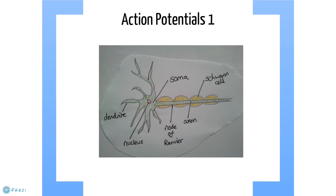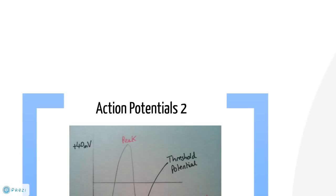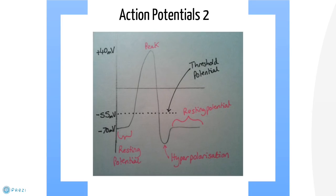An action potential is the conduction of an electrical signal down the axon. Action potentials are generated by sodium and potassium ion movements. At rest, the inside of the axon is at minus 70 millivolts compared to the extracellular matrix. This is maintained by the activity of sodium-potassium ATPase pumps that actively deposit three sodium ions out of the cell for every two potassium ions into the cell.